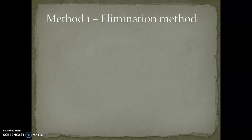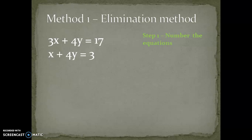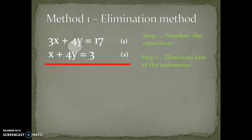Let's look at a second question. As with the first question, the first step is to number the equations. 3x plus 4y equals 17 is numbered as equation 1, and x plus 4y equals 3 is numbered as equation 2. Step 2: eliminate one of the unknowns by subtracting. 3x minus x equals 2x, 4y minus 4y equals 0, and 17 minus 3 equals 14.